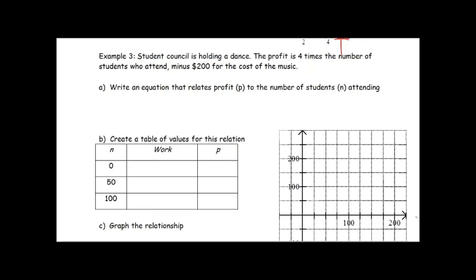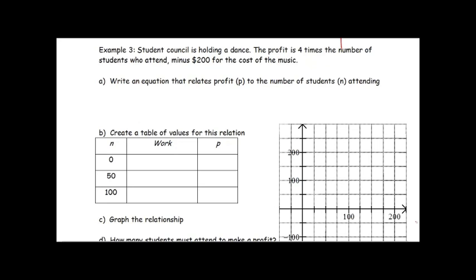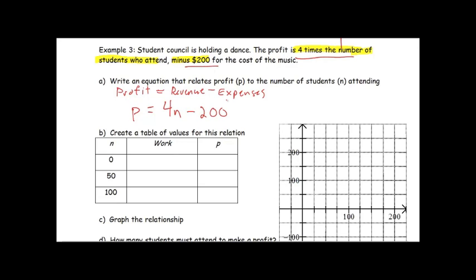In example three, student council is holding a dance. The profit is four times the number of students who attended minus $200 for the cost of the music. We need to write an equation relating profit to number of students. Profit equals revenue minus expenses. So our profit p equals four times the number of students n, minus 200.